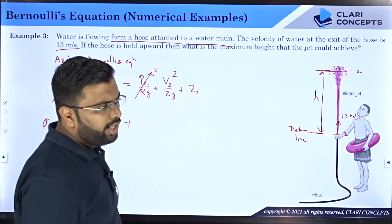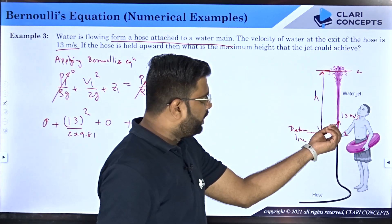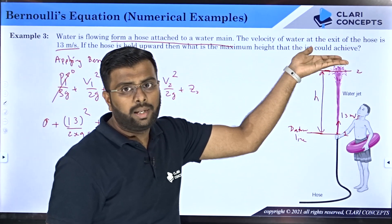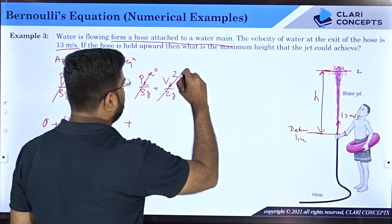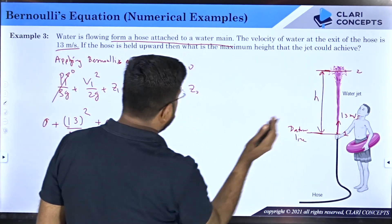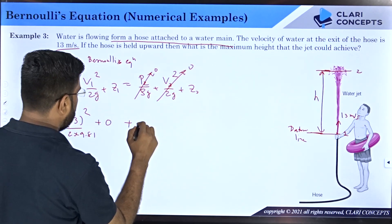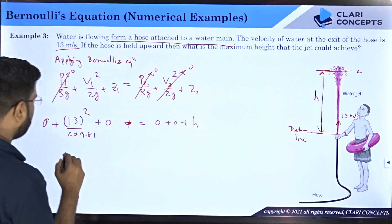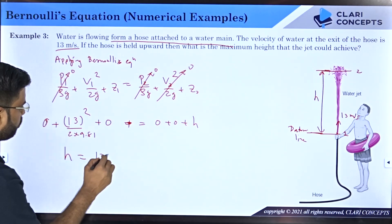What is velocity at point two? The moment fluid reaches the topmost position, the velocity is zero at some instant of time. Therefore this is also zero. What is z2? z2 is h from the datum. This should be equal to zero + zero + h. So h will be equal to 13²/(2×9.81).